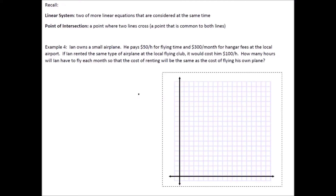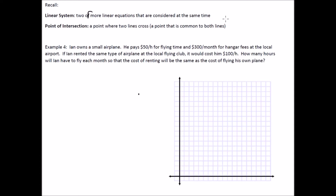A linear system is two or more linear equations that are considered at the same time. When we have an x and y axis and plot both linear equations, we look for the point of intersection — the point where the two lines cross. That point is common to both lines.